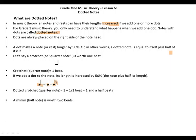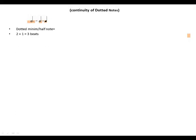A minim is worth two beats. If we add a dot, its length is also increased by 50 percent. This is a dotted minim, which equals a minim plus half of a minim, which is a crotchet. Dotted minim or half note equals two plus one, which equals three beats.